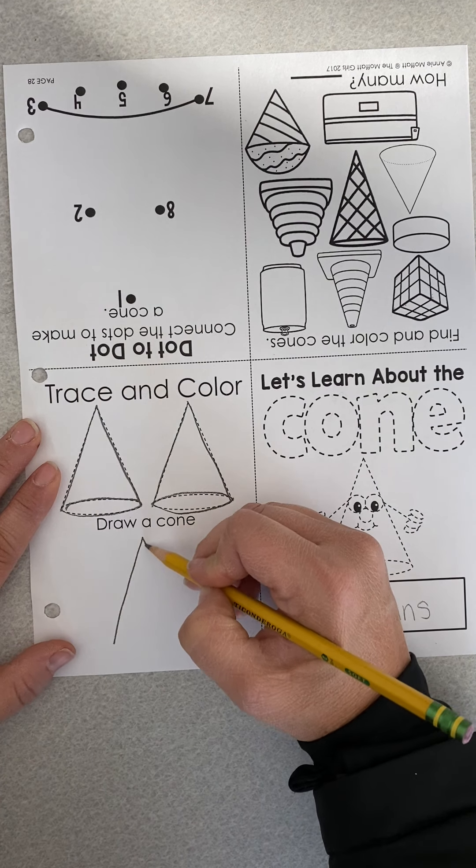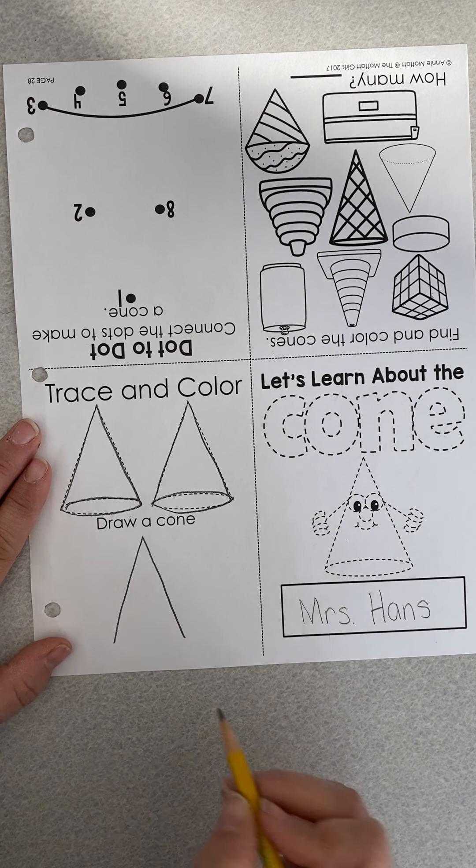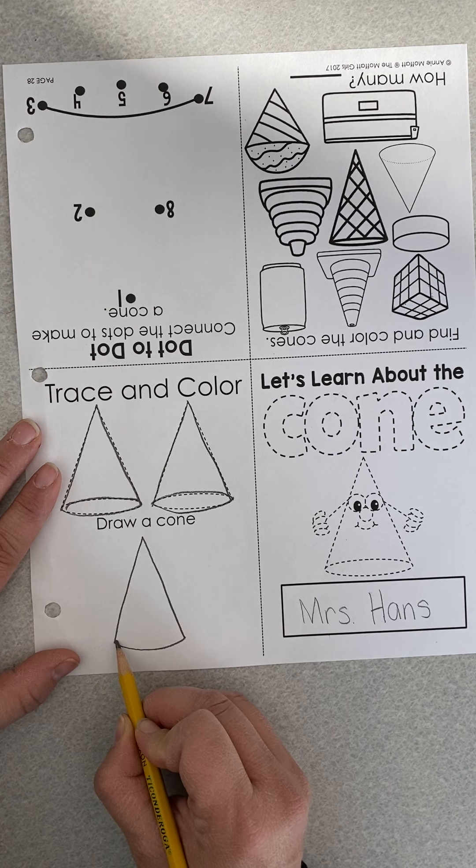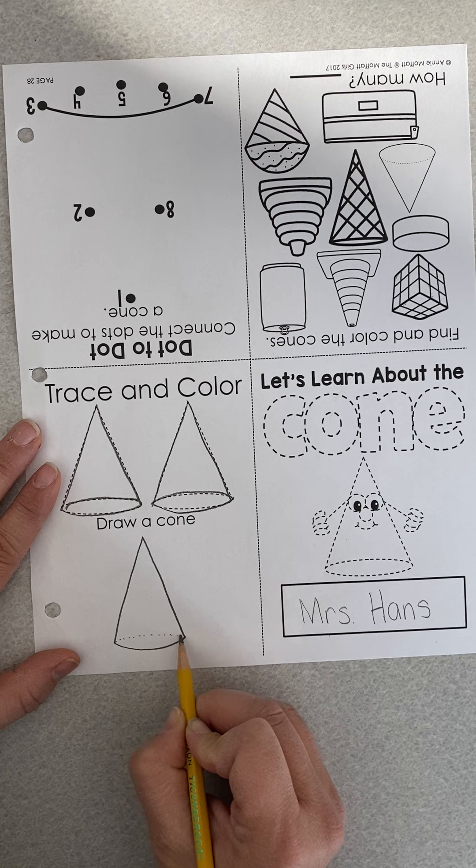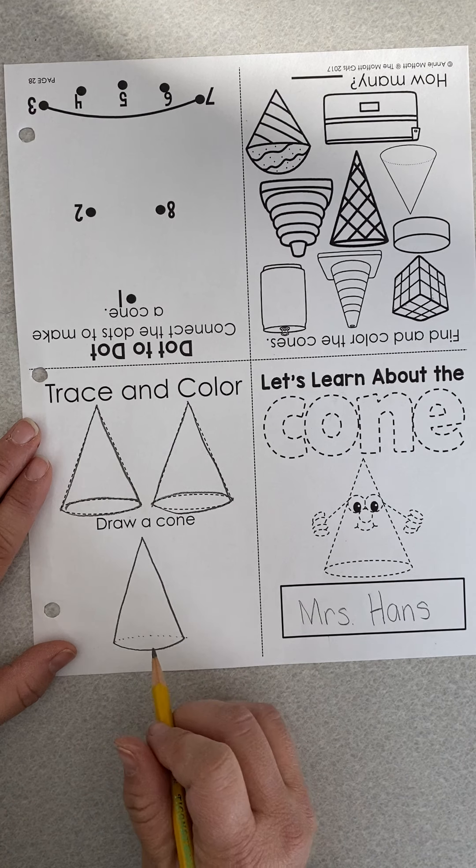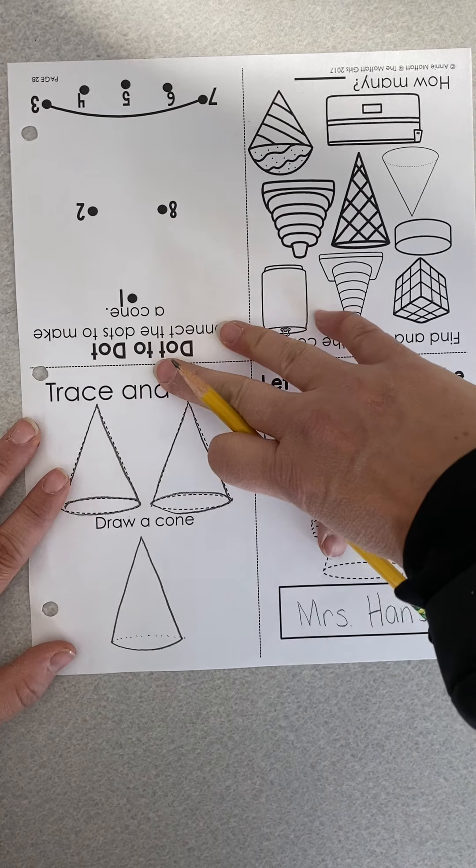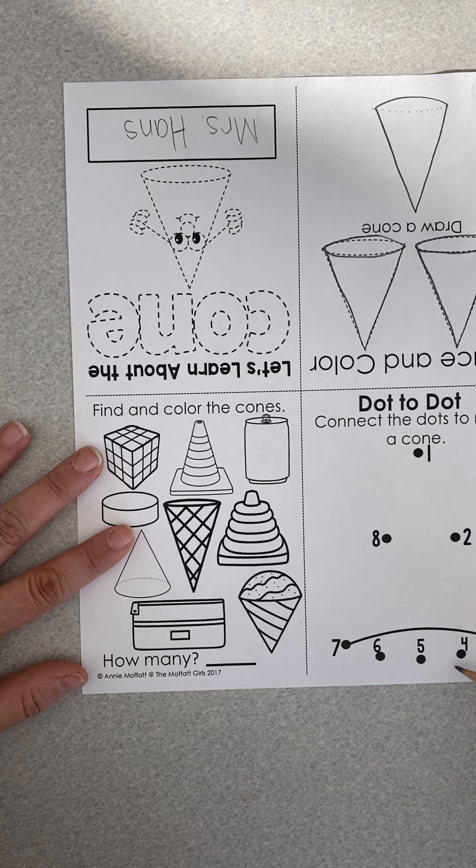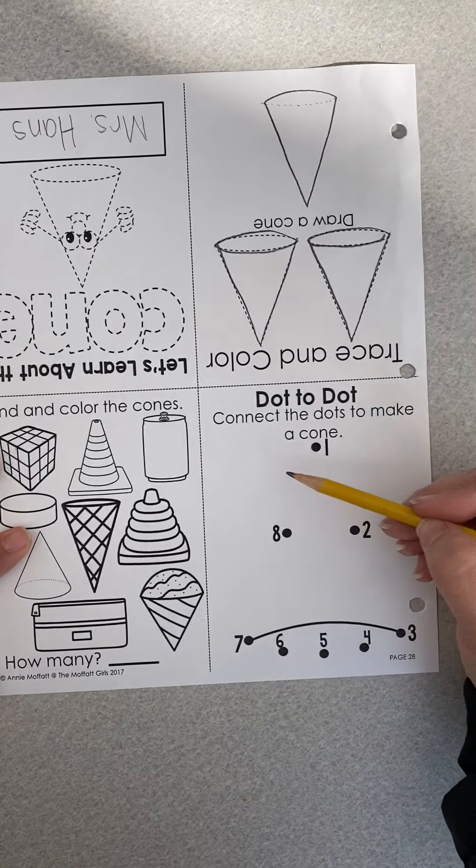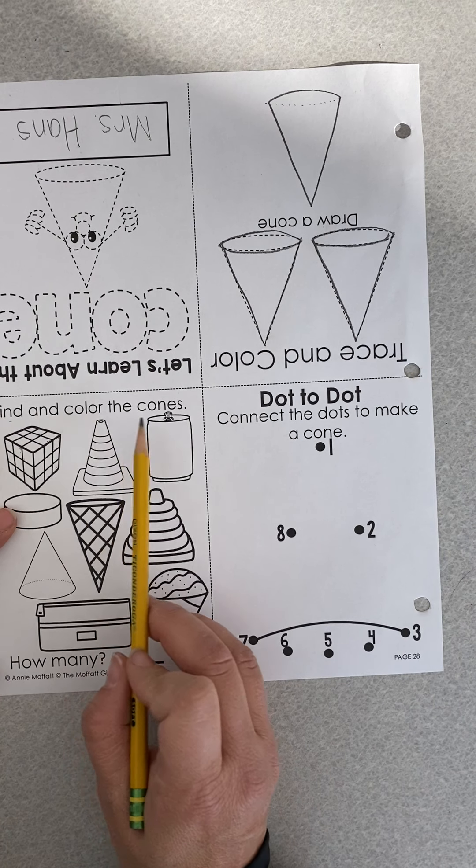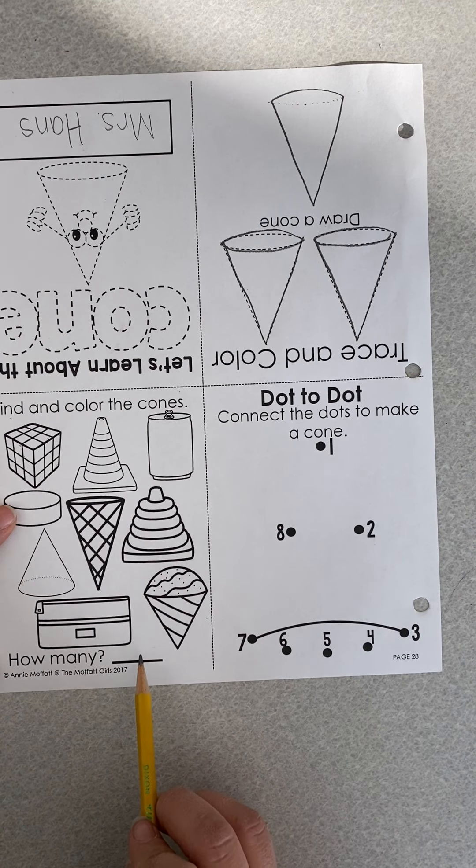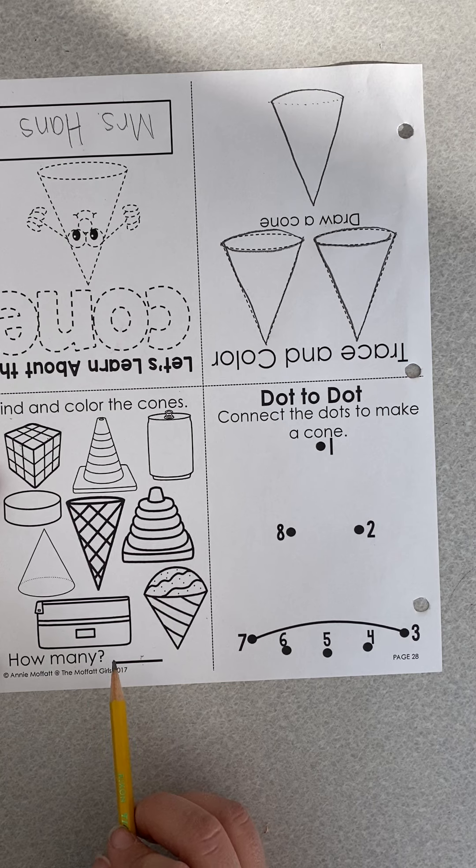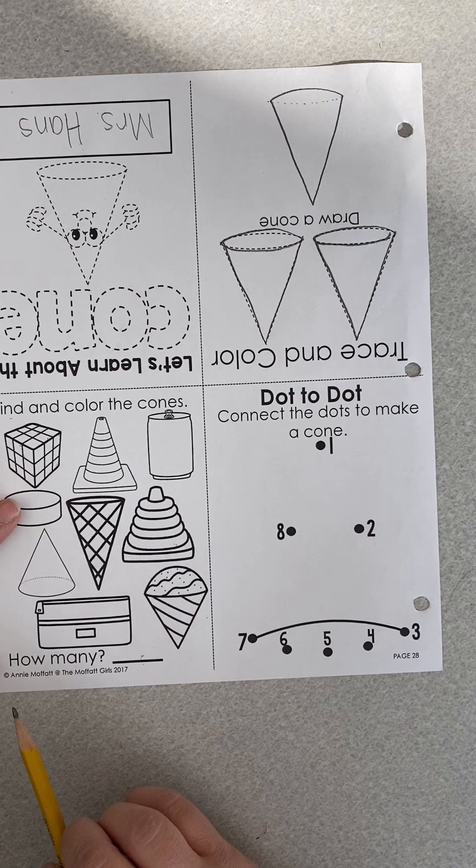To draw it yourself, you're going to do it like making a capital A, except I'm not drawing that line across the middle. And then I'm going to do like a bended part down here. You could do another bended part. It's mostly a dotted line though because it's behind. So that's a tricky one. When you're done drawing a cone by yourself, you're going to turn your paper over and connect the dots to make your cone. Then you're going to find and color the cones and write with a pencil how many cones you see. They have to just be mostly looking like a cone. They don't have to be exact.